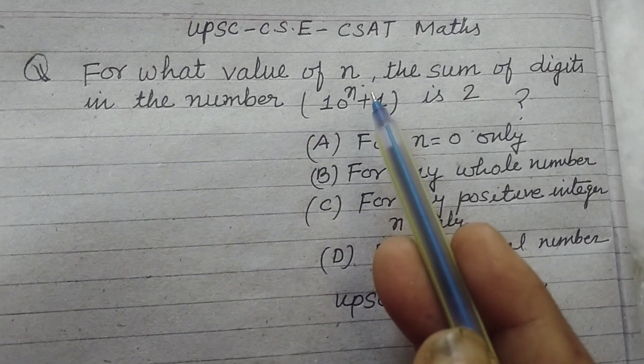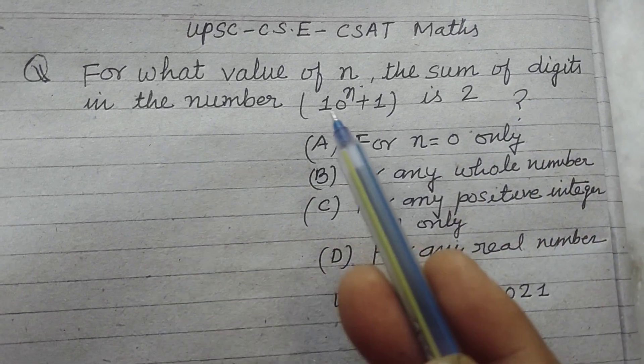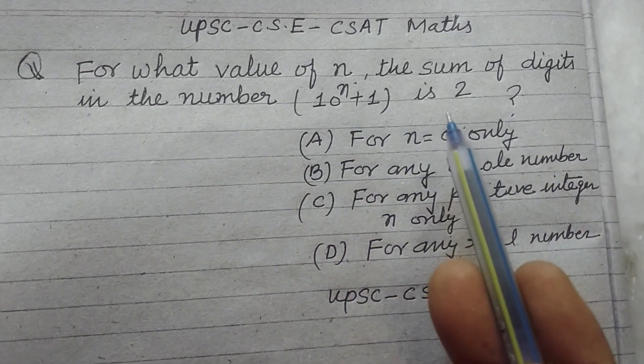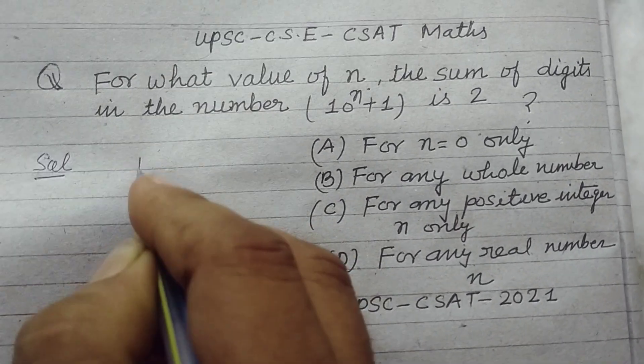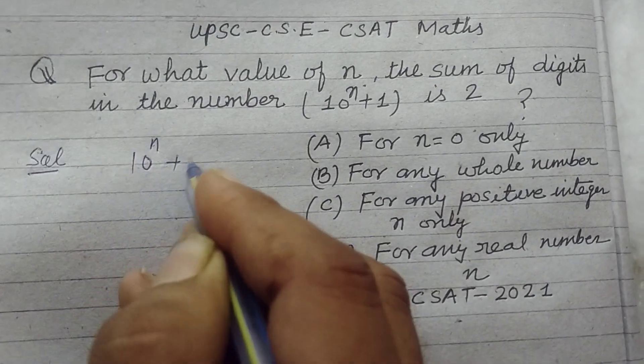For what value of n, the sum of digits in the number (10^n + 1) is 2? The given number is 10^n + 1.